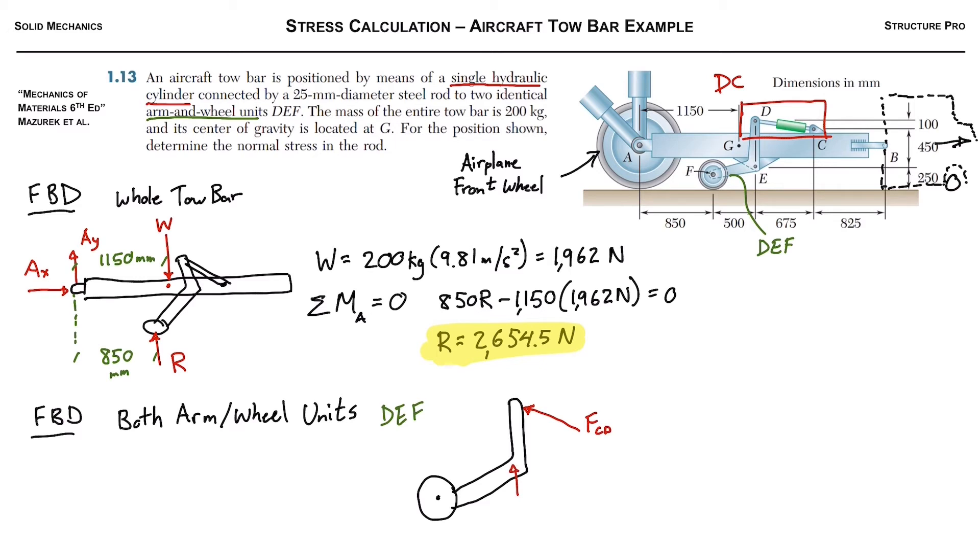Then we know we have this point where we connect to the tow bar itself, point E. Put an EX and an EY, and finally the reaction that we've already calculated.